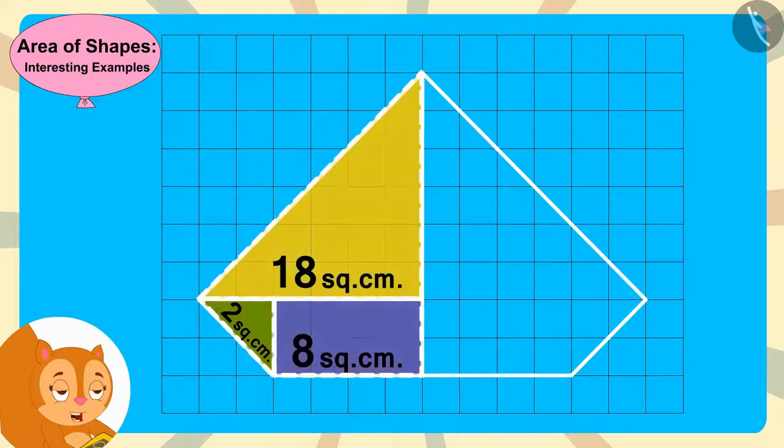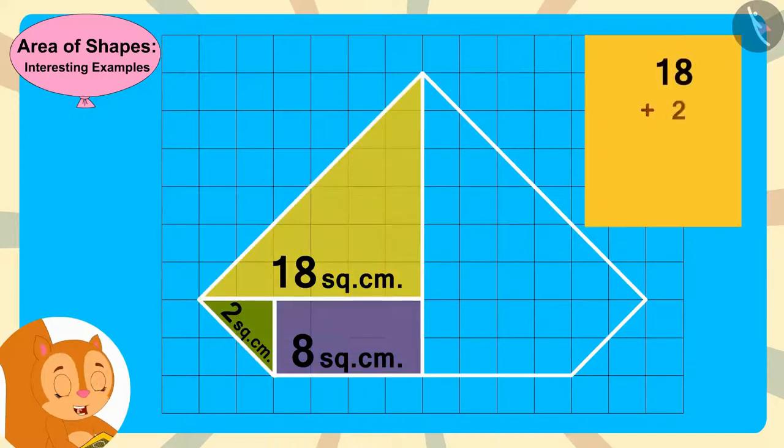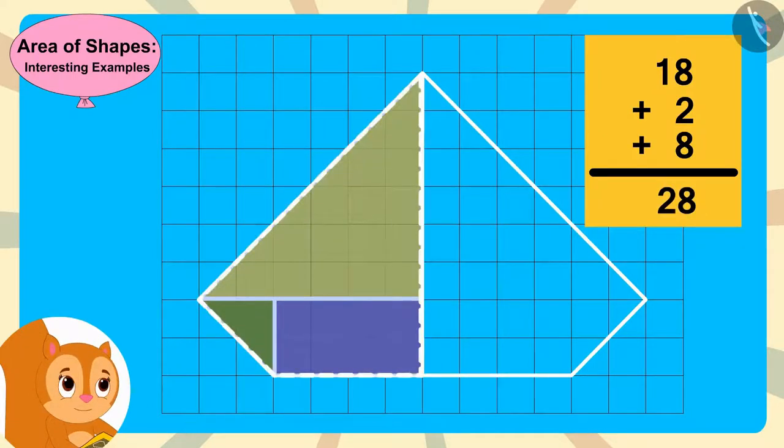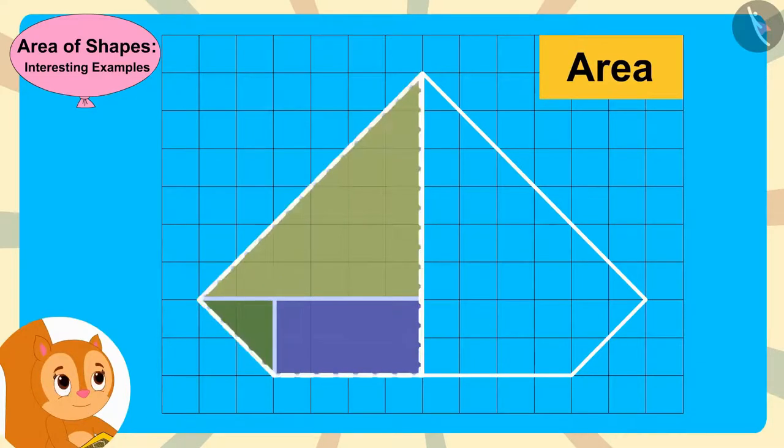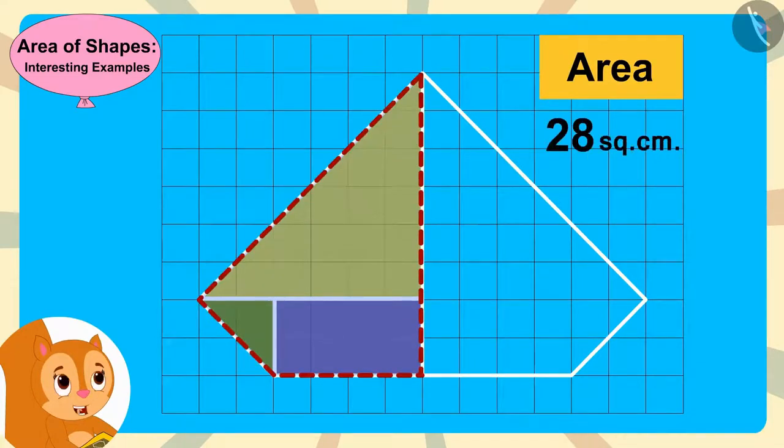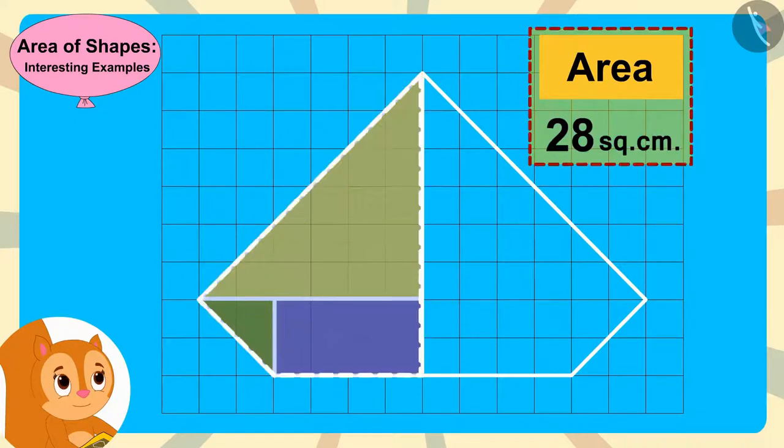By adding the area of all these shapes, I will get the area of this part of the diamond. The area of this part of the diamond is 28 square centimeters. Chanda quickly found the area of this part of the diamond.